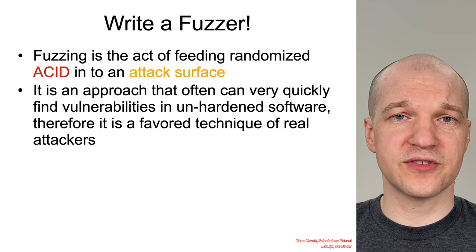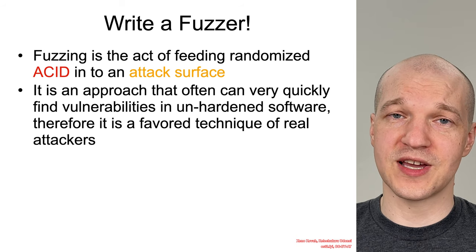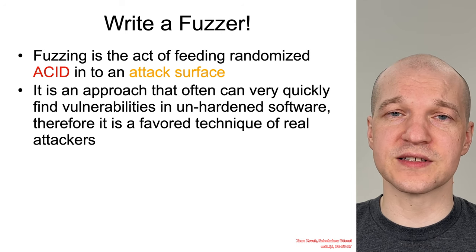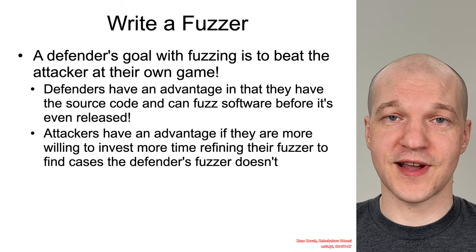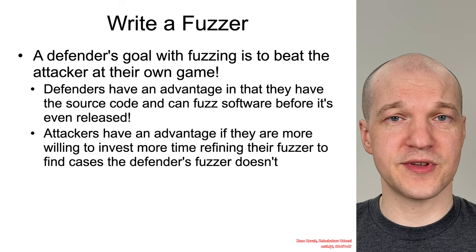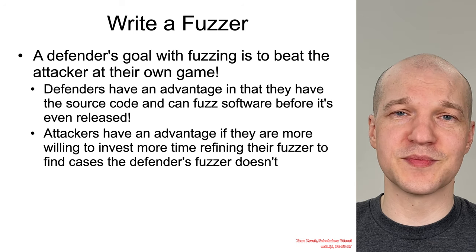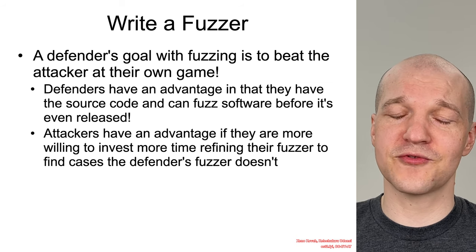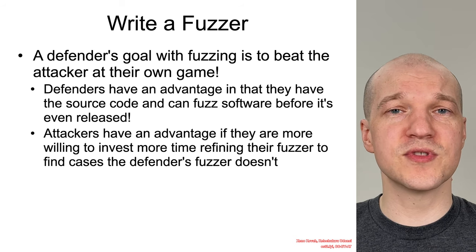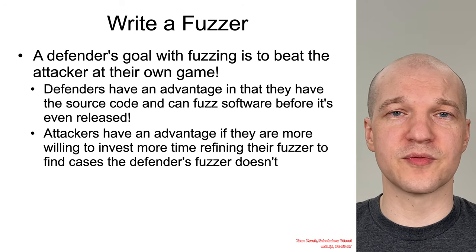It very often finds bugs very quickly if it is an unhardened program where people have not programmed paranoid, and therefore it is actually a favored technique of real attackers. But a fuzzer's goal when fuzzing is to beat the attacker at their own game — feeding randomized garbage input to their attack surfaces before the attacker ever can, closing down bugs before they ever make their way into the wild.